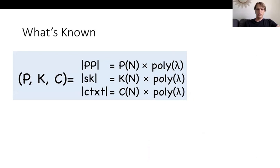Let me just introduce some notation. There are three parameters of interest in traitor tracing: the public key size, the secret key size, and the ciphertext size. I will use a triple of functions of N to denote the public key, secret key, and ciphertext size respectively.